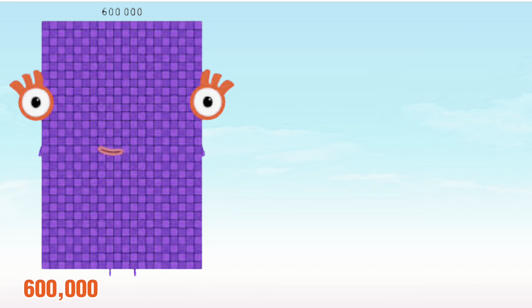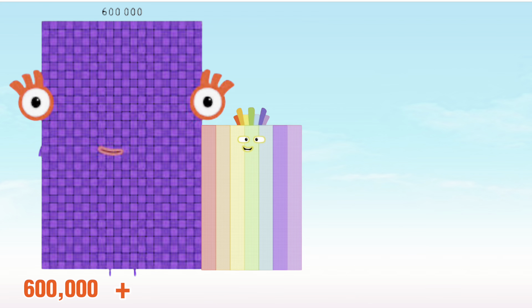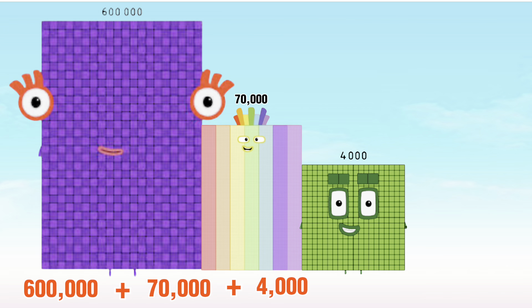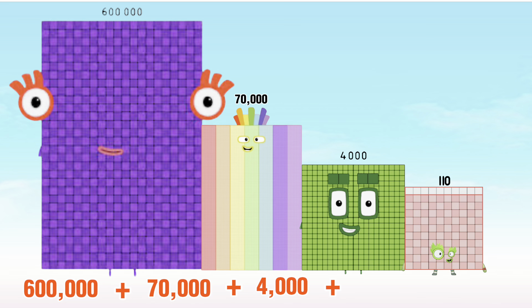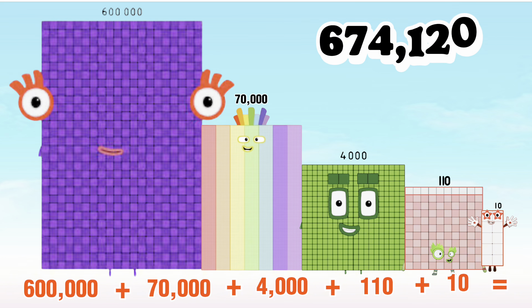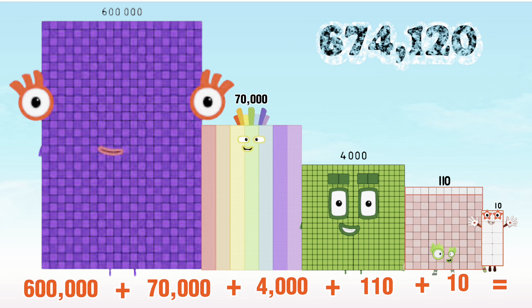600,000 plus 70,000 plus 4,000 plus 110 plus 10 is equal to 674,120.